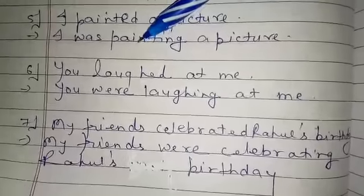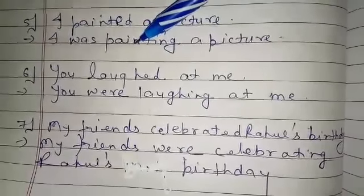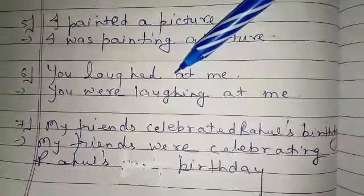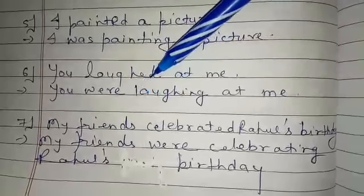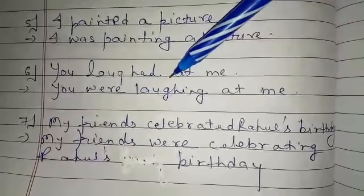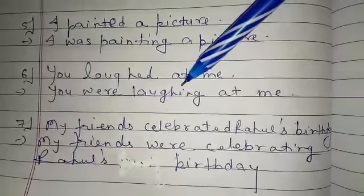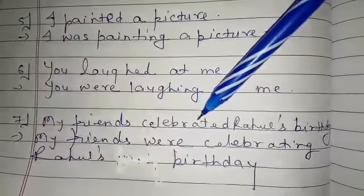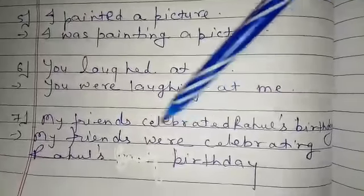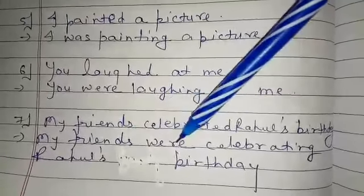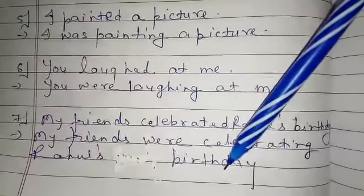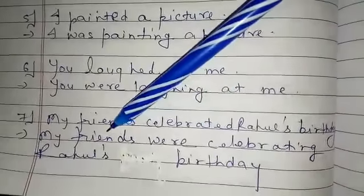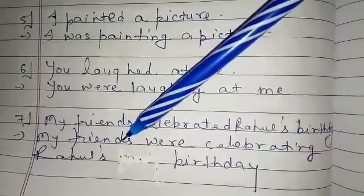Next, question number 6: You laughed at me. This is also in simple past. The answer is: You were laughing at me. Next: My friends celebrated Rahul's birthday. The answer is: My friends were celebrating Rahul's birthday. The subject is plural, that's why we use 'were' plus V4.